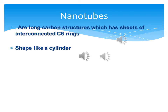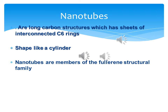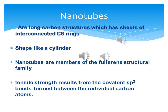Researchers have synthesized long carbon structures called nanotubes, which consist of interconnected C6 rings and are usually shaped like a cylinder. Nanotubes are members of the fullerene structural family. Carbon nanotubes are one of the strongest and stiffest materials, and they have a relatively good tensile strength. This strength results from the covalent sp2 bonds formed between the individual carbon atoms.